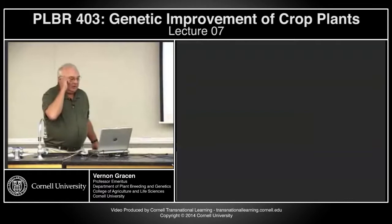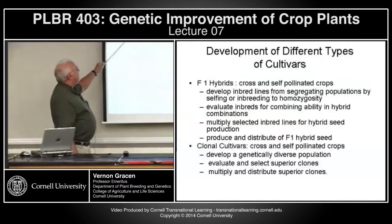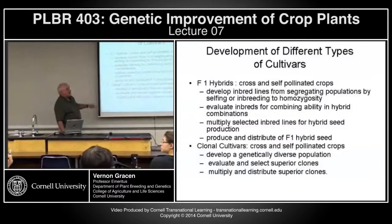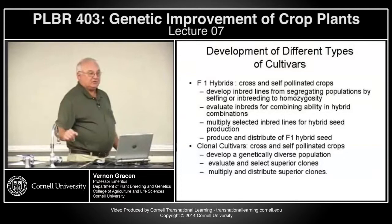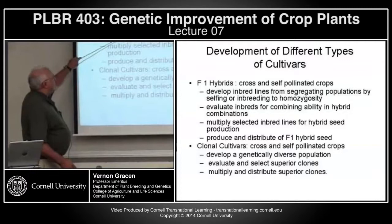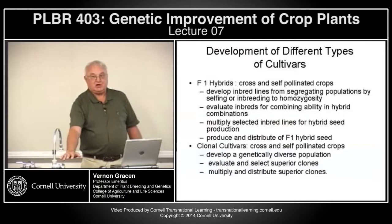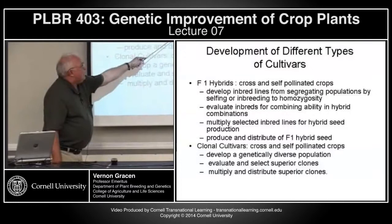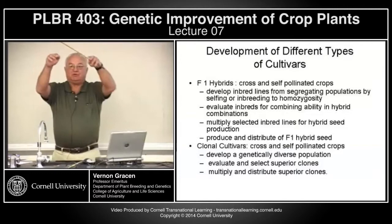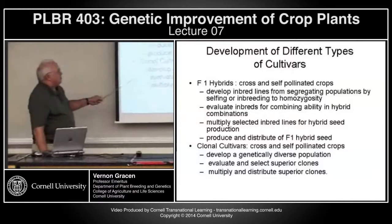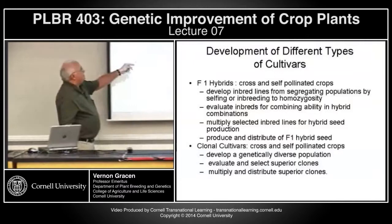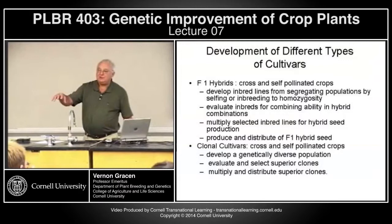For F1 hybrids, you do a bit of both. For cross-pollinated crops, you first develop inbred lines by selfing or inbreeding genotypes to homozygosity. Unfortunately, inbreeding depression then lowers the performance of those selfed materials, so you have to evaluate them for combining ability by making hybrid combinations, which restores heterosis and performance. Then you multiply the inbred lines as parents and produce and distribute F1 hybrid seed. For self-pollinated crops, you already have uniform, vigorous inbred parents — you simply cross them to produce F1 hybrid seed.